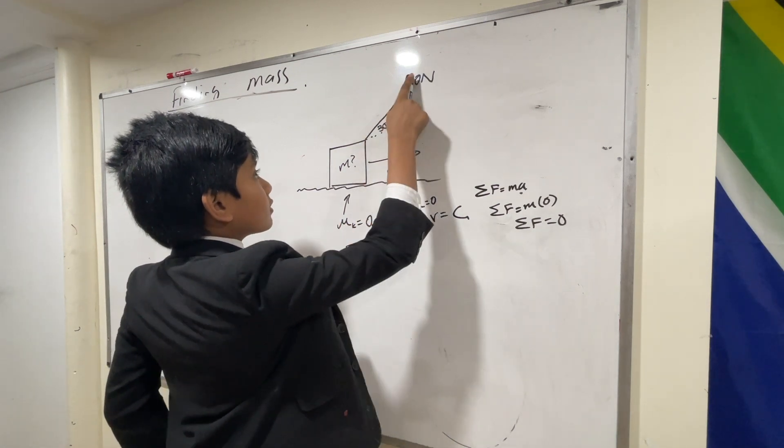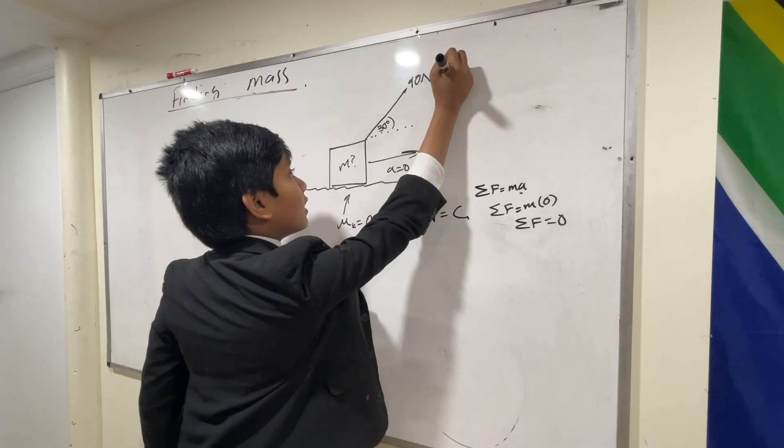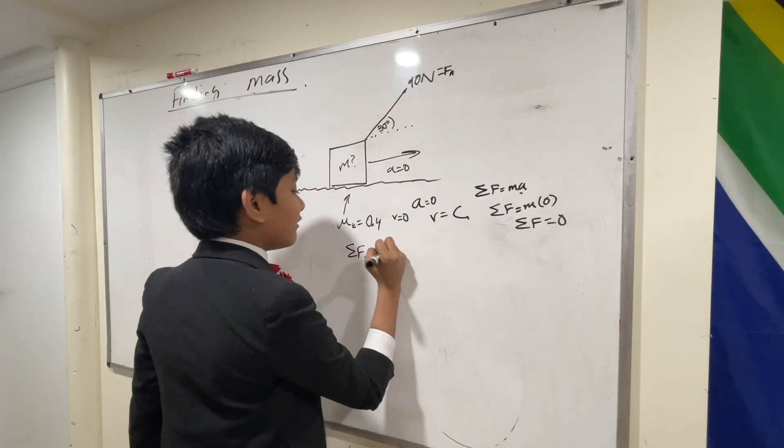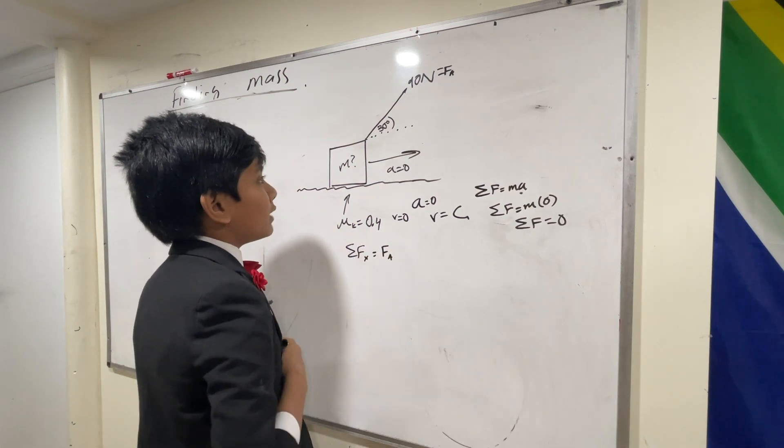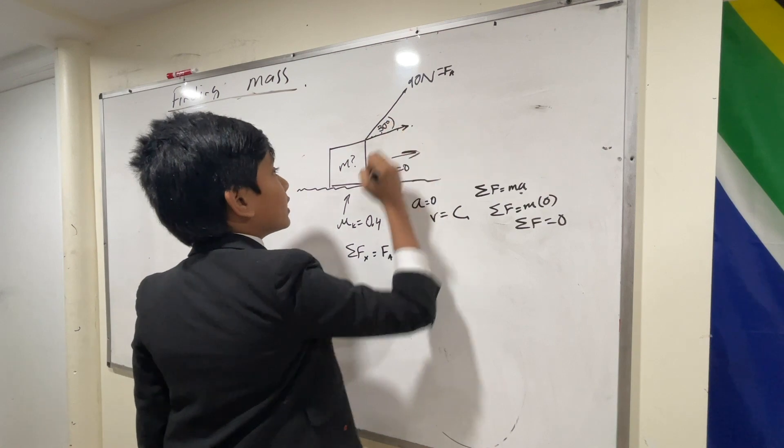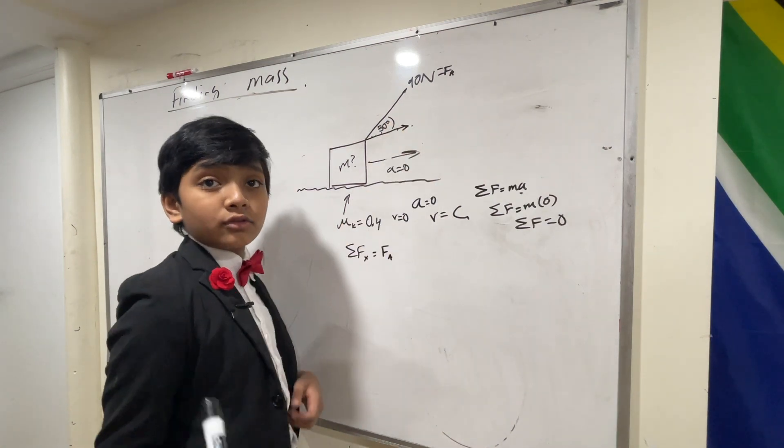So now we have, let's call this force fn, for f applied. So we have f applied, and what component is in the x direction? Well, obviously the x component. But will we use cosine or sine for that? What's your guess?